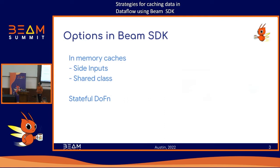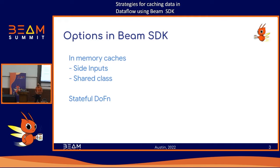Looking at the Beam SDK, there are mainly three options you can leverage to maintain some sort of cache in Dataflow. The two in-memory options are the side input and the shared class. The third option is a stateful DoFn.